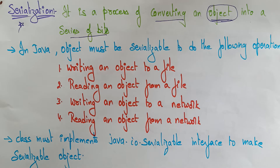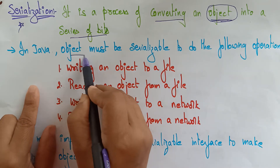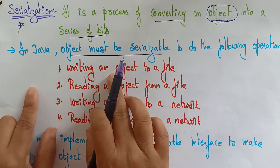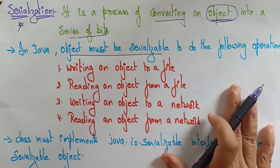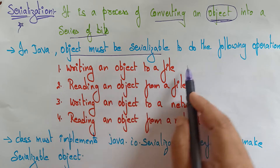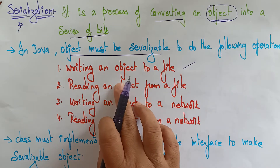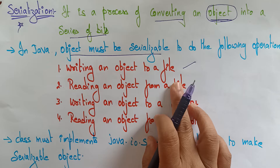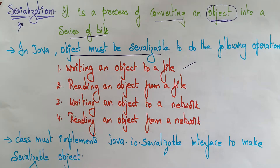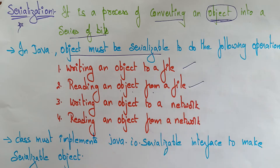So why do we need to convert an object into a series of bits? In Java, object must be serializable to do the following operations: writing an object to a file — if you want to write an object to a file, we need to convert it into a series of bits, so that's why serialization is required. Reading an object from a file also requires serialization.